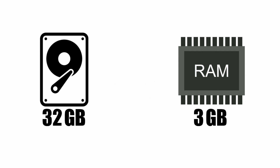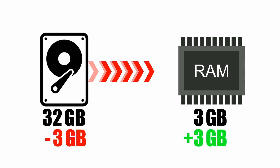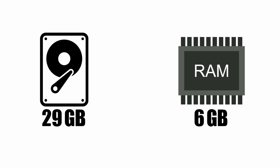Suppose your device has 32 GB internal storage and RAM is 3 GB. Now you want to increase your RAM — you can share 3 GB of your internal storage with RAM. After that, the total RAM size will be 6 GB. This way, you can use free space of your internal storage to increase RAM.